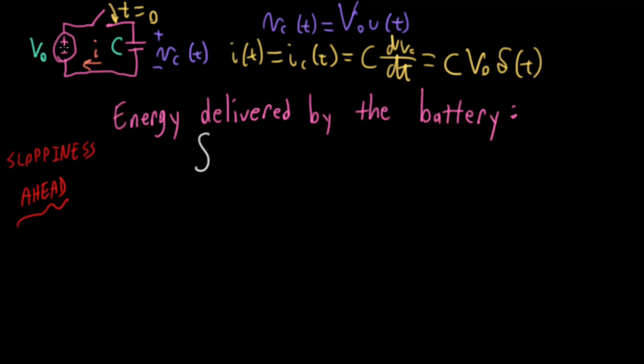So the energy delivered by the battery is going to be this voltage V0, that's the voltage, times the current through the battery, which is going to be the same as the current through the capacitor, so that's C V0 delta T. And then I need to have DT at the end here. So this is all going to give me C V0 squared. And then if I integrate this delta function over its full range, that's just going to give me 1.